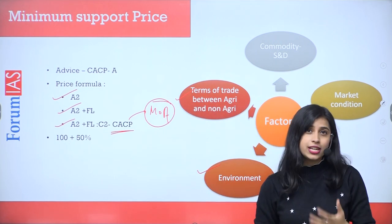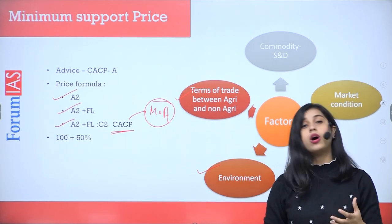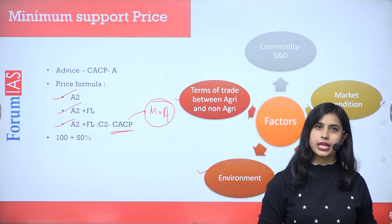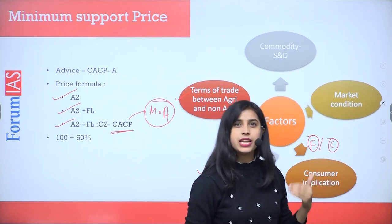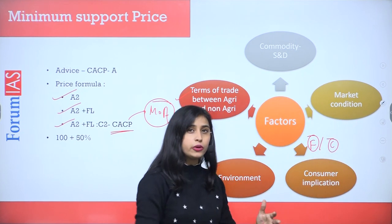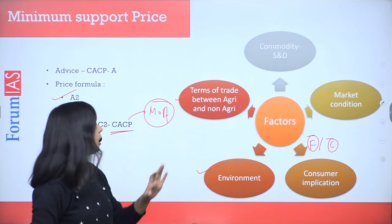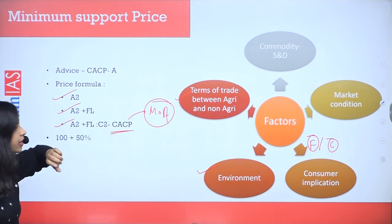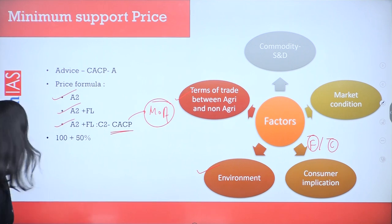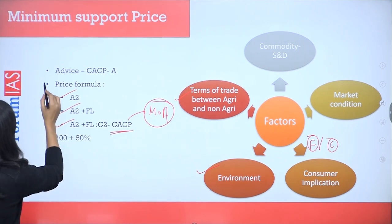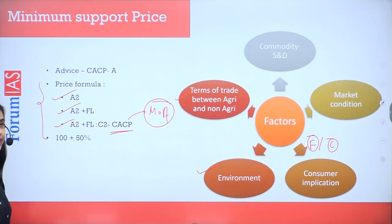The government also keeps in mind the environment — it does not want to support commodities that may use too much pesticide or too much water, which may hamper environmental health. They also consider the terms of trade between agriculture and non-agriculture commodities. While deciding about agriculture, they do not want non-agriculture commodities to be set aside. These are certain things the government keeps in mind before declaring the MSP.